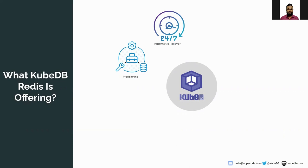When your database faces disaster scenarios — let's say some node dies or some node does not accept any connections — then when the node comes back and wants to rejoin the cluster, KubeDB will help those nodes rejoin the cluster, so the cluster will always be ready when nodes come back.